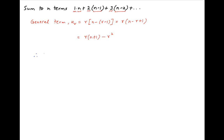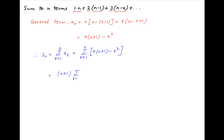Therefore, the sum to n terms, let's denote it by Sn, is equal to the summation of UR where r goes from 1 to n, which is equal to the summation from r=1 to n of r times (n plus 1) minus r squared. This equals (n plus 1) times the summation of r, minus the summation of r squared, where r goes from 1 to n.